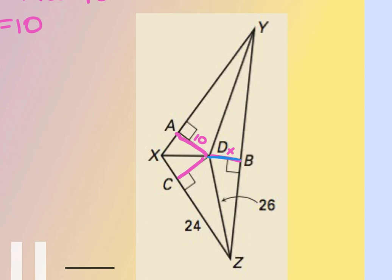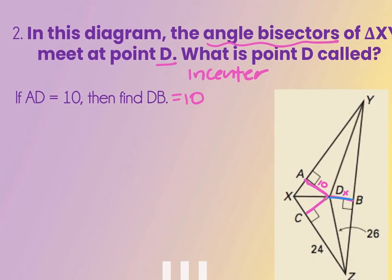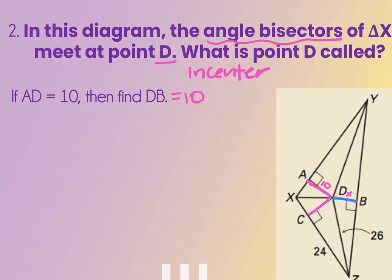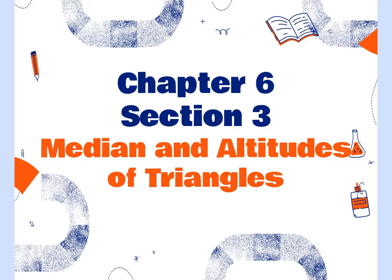So we're going to learn about two more today. By the end of today you're going to know four special segments, the name of the point where they meet, and the theorem attached — almost all of them have a theorem. Section 6-3 is about medians and altitudes. First we'll learn what they are, then the point of concurrency, then the attached theorem.